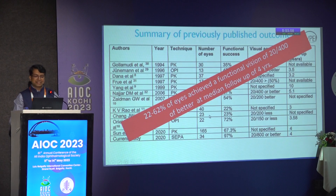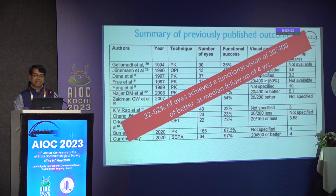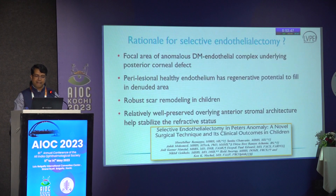The current retrospective study I'm showing in the last row, published in 2020, had a 97 percent success rate — meaning 97 percent of these children who underwent SEPA had 20/800 or better vision even at the end of four years of follow-up. This was one of the premises for why we pursued this particular study.